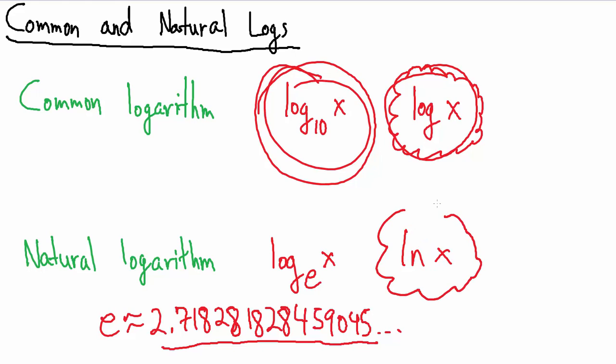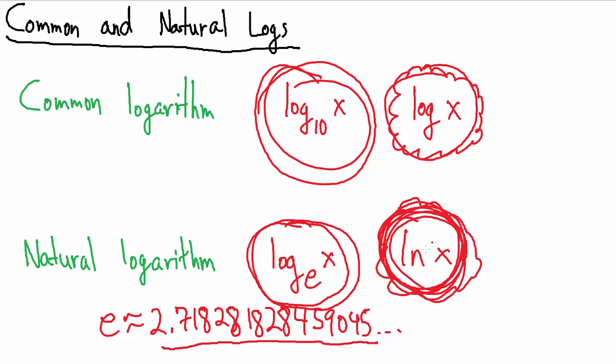So if you ever see this written, that's a short way of just saying base e log of x. Now you could say this and that will be correct, but people might look at you funny. Because nobody ever really writes this. But again, it is correct. But the more natural way to do that, sorry, bad joke, would just be to use this.